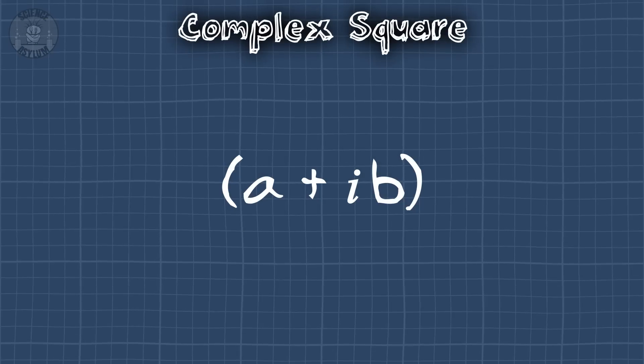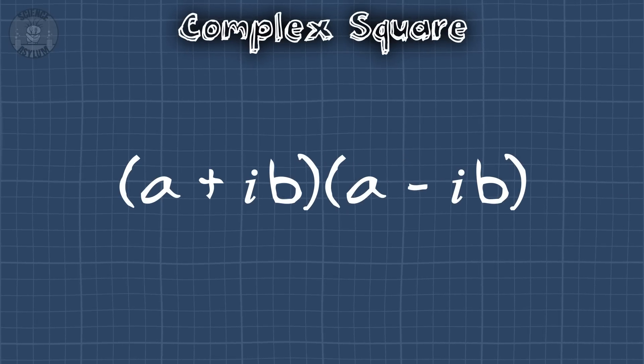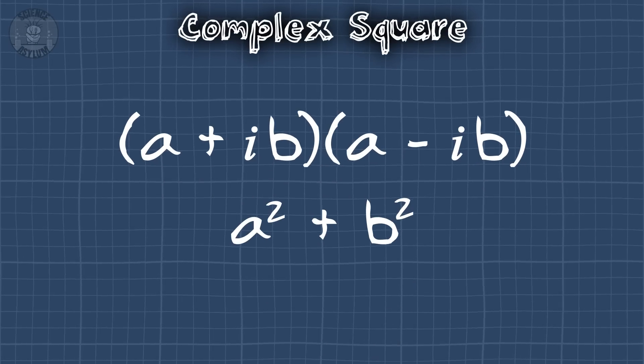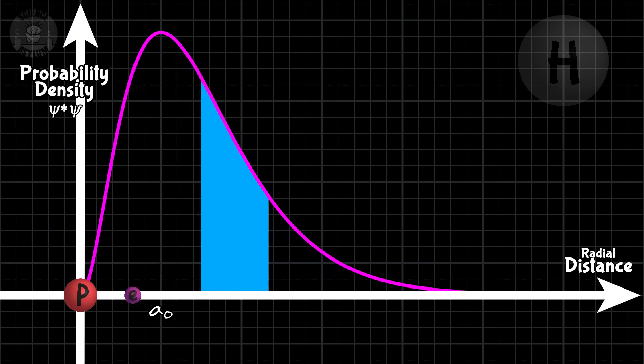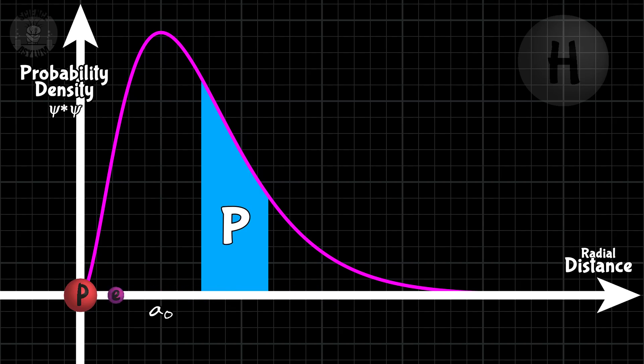So, what's a quantum wave function? It's a mathematical entity that has no physical meaning, but if you take its complex square, you give it meaning as a probability density. The total area shaded by it should be 1 or 100%.